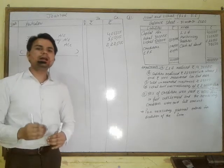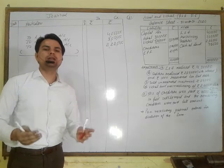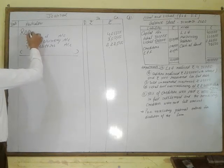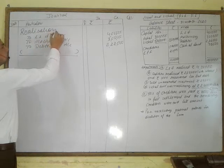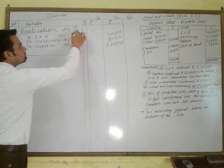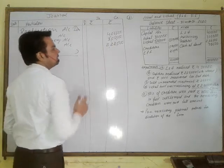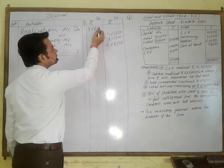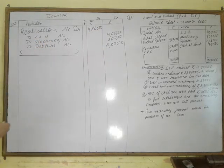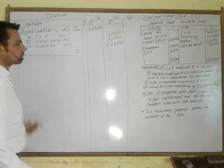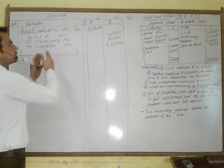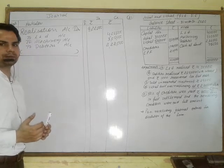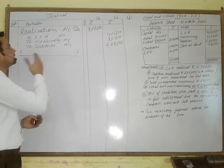Now we open a temporary nominal account called the Realization Account. Realization Account is debited here with the total of these assets: ₹4,00,000 + ₹3,00,000 + ₹2,22,000 = ₹9,22,000. We opened this new account because after closing the asset accounts, we will realize some cash from them.